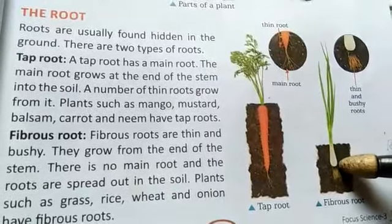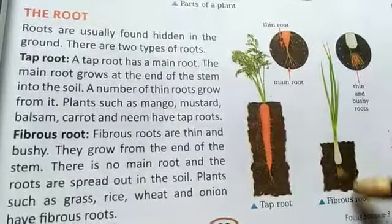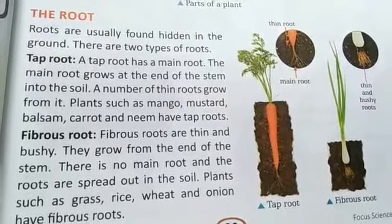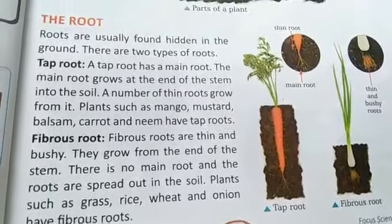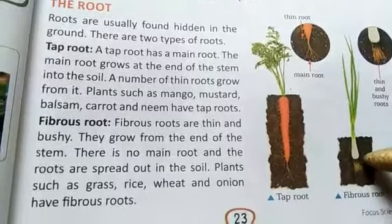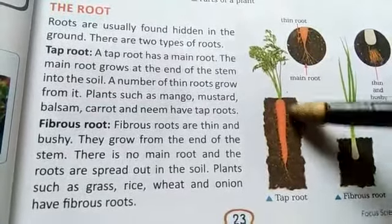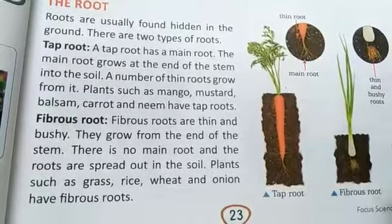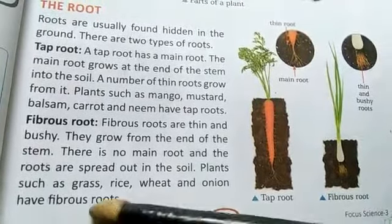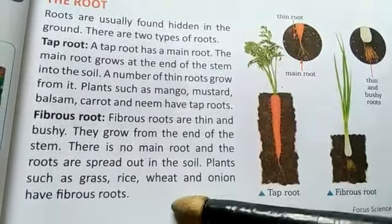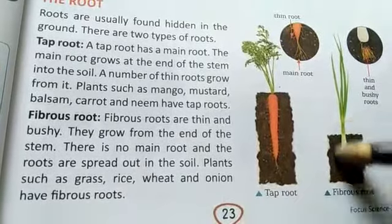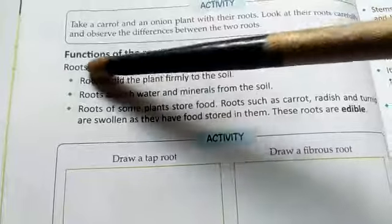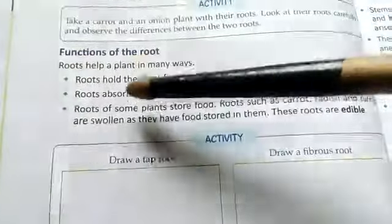Fibrous roots are thin and bushy. They grow from the end of the stem. At the end of the stem, you can see a lot of hair-like structures growing together in one place — these are fibrous roots. There is no main root in fibrous roots. Examples include grass, rice, wheat, and onion.